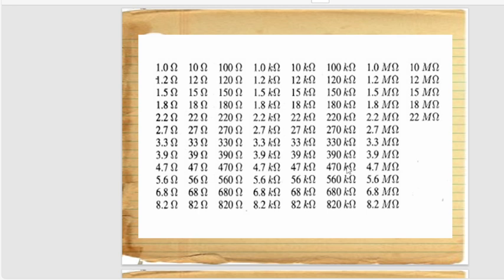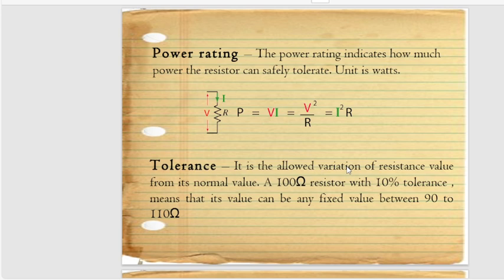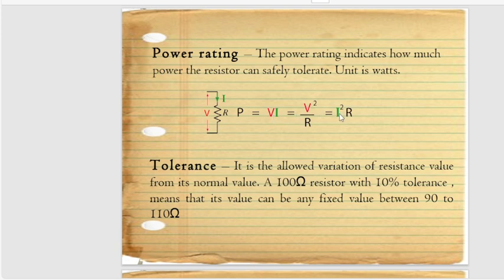If we talk about power ratings, the power rating indicates how much power the resistance can safely tolerate. The unit is watts. As you know, the formula for power is P = VI — the product of voltage and current. If we substitute current using Ohm's Law, it becomes P = V²/R, and if we substitute voltage, it becomes P = I²R.